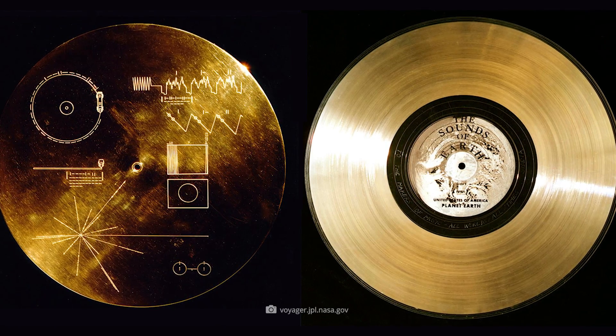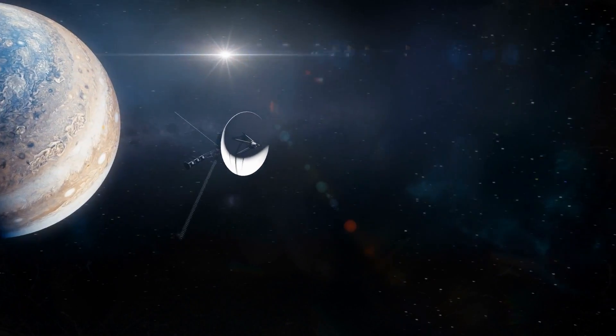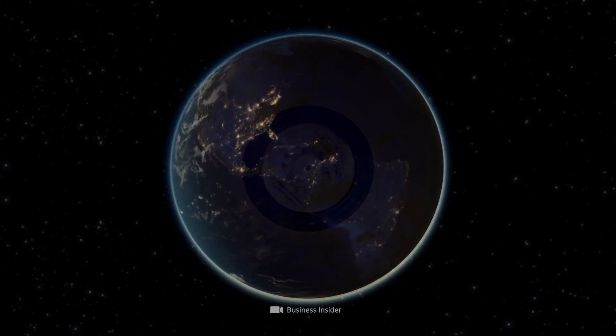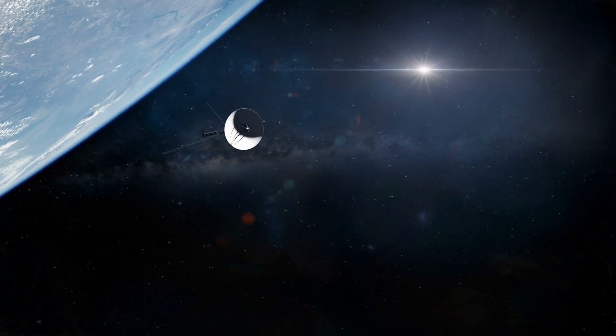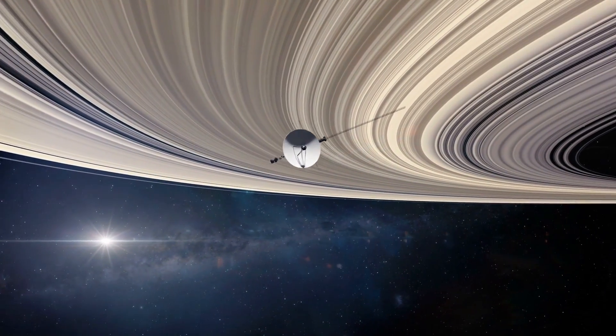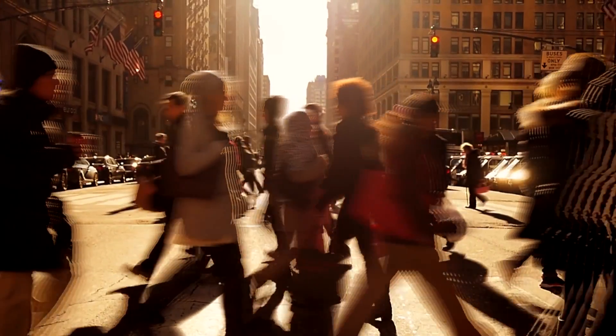These are two golden data disks with which the space probes Voyager 1 and Voyager 2 were equipped. On the respective data carriers is visual and audio information, which likewise supply details about life on our blue homeland planet. With a predicted lifespan of up to 500 million years, the Voyager golden records could still bear witness to our former existence long after the era of mankind has passed.